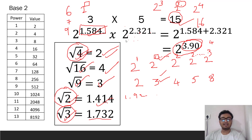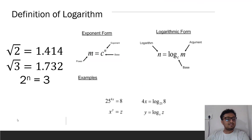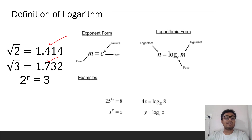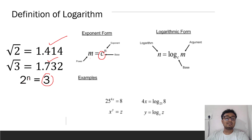They defined logarithm as follows: if m = c raised to the power n, then c is called the base and n is called the exponent or power. The logarithm of m to the base c is defined as n, written as log of m base c = n. It is simply asking: what power must the base c be raised to in order to get m?